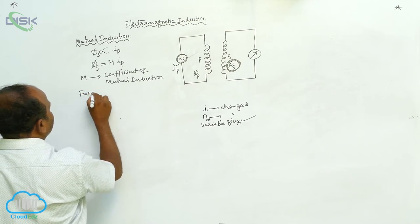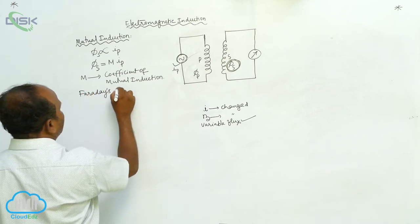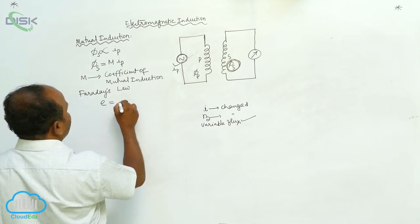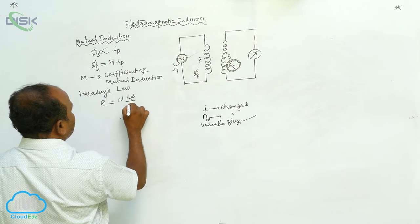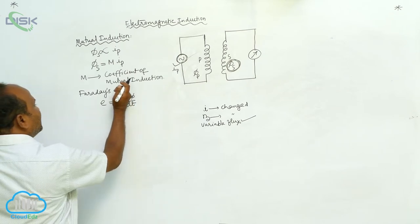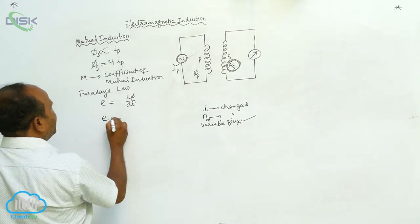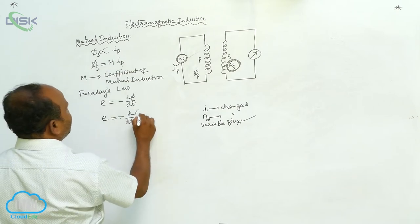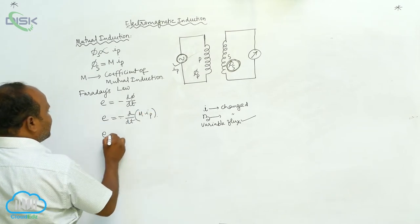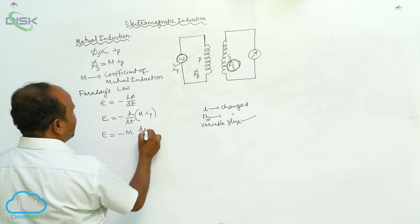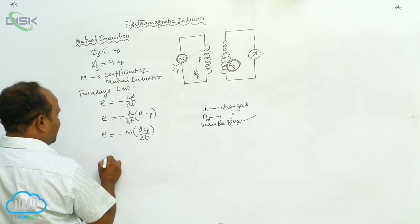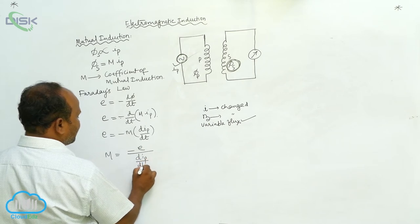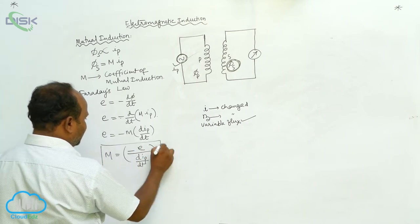According to Faraday's law, induced EMF E equals N·(dΦ/dt), or simply E equals dΦ/dt. E equals minus d/dt of (M·IP). Therefore, E equals minus M·(dIP/dt). Therefore, M equals minus E divided by (dIP/dt). This is the coefficient of mutual induction.